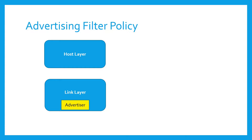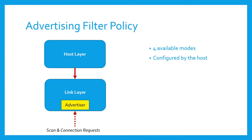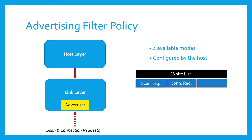The advertising filter policy determines how the advertiser processes scan and connection requests. The policy can be implemented in one mode out of four available, and the host configures the mode. Using the first mode, the link layer processes scan and connection requests from all devices. The white list is not in use in this case, and this is the default mode on reset.